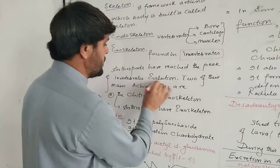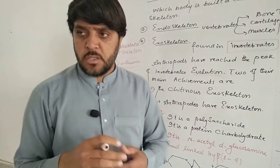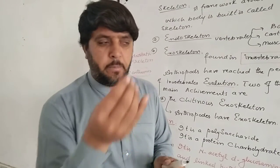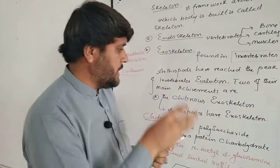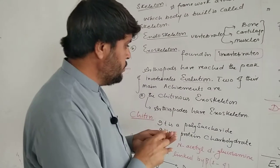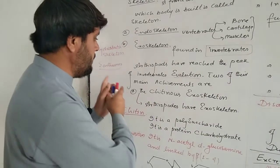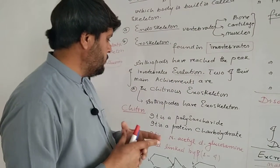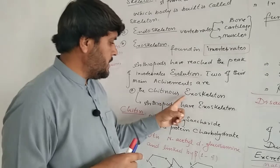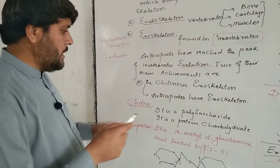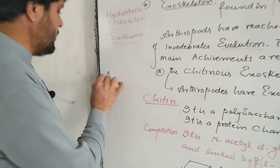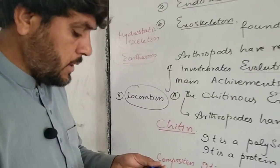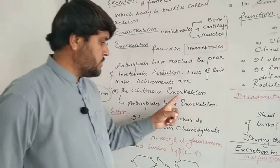Arthropods have reached the peak of invertebrate evolution. Evolution means slowly gradual change in the universe or in organisms, from simple to complex. Two of their main achievements are the chitinous exoskeleton and locomotion. Today we will discuss the chitinous exoskeleton.